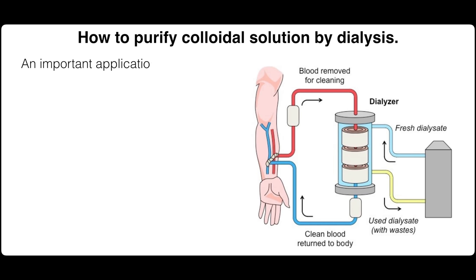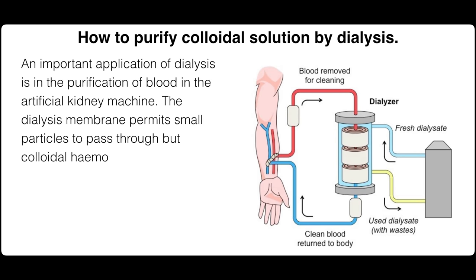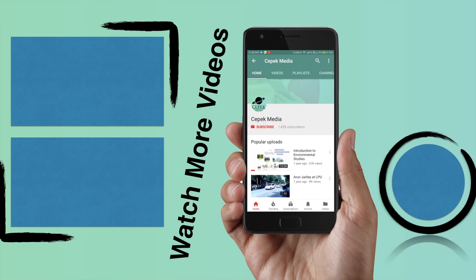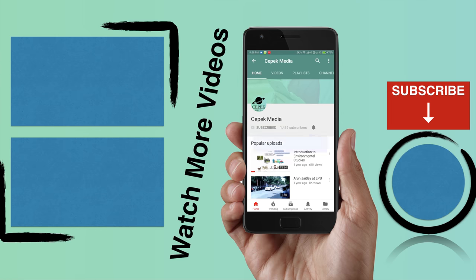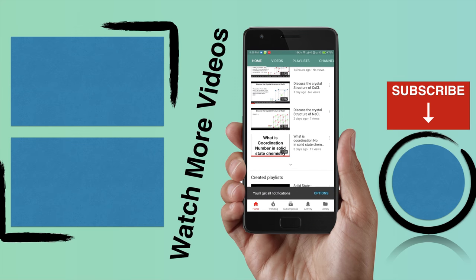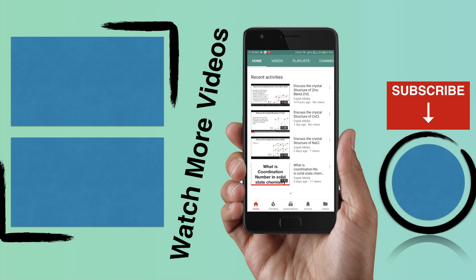An important application of dialysis is in the purification of blood in the artificial kidney machine. The dialysis membrane permits small particles to pass through, but colloid hemoglobin does not pass through.